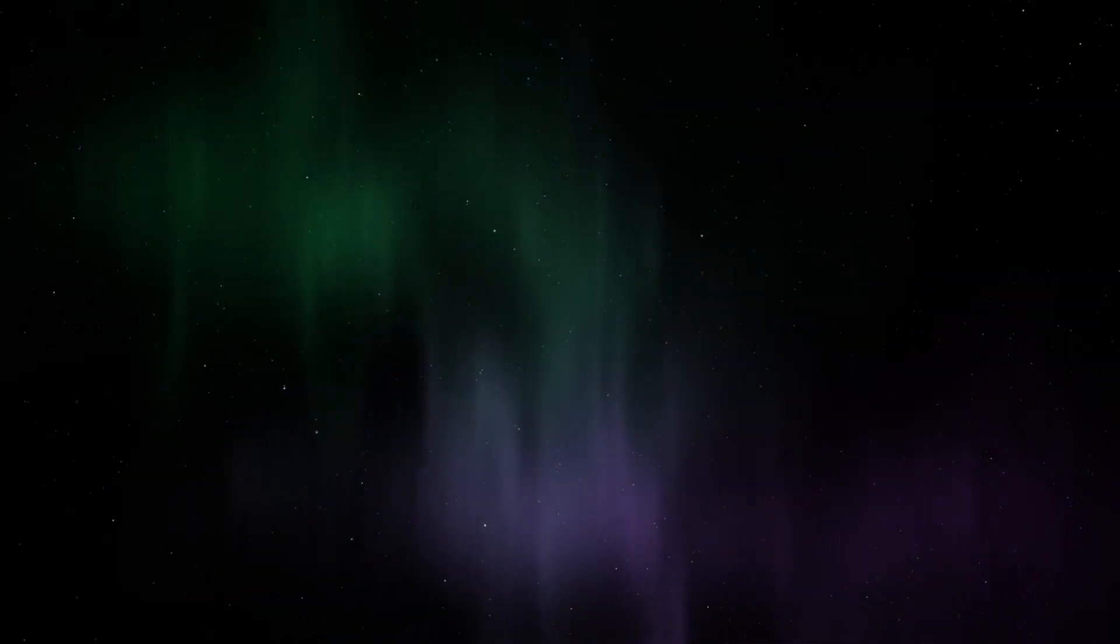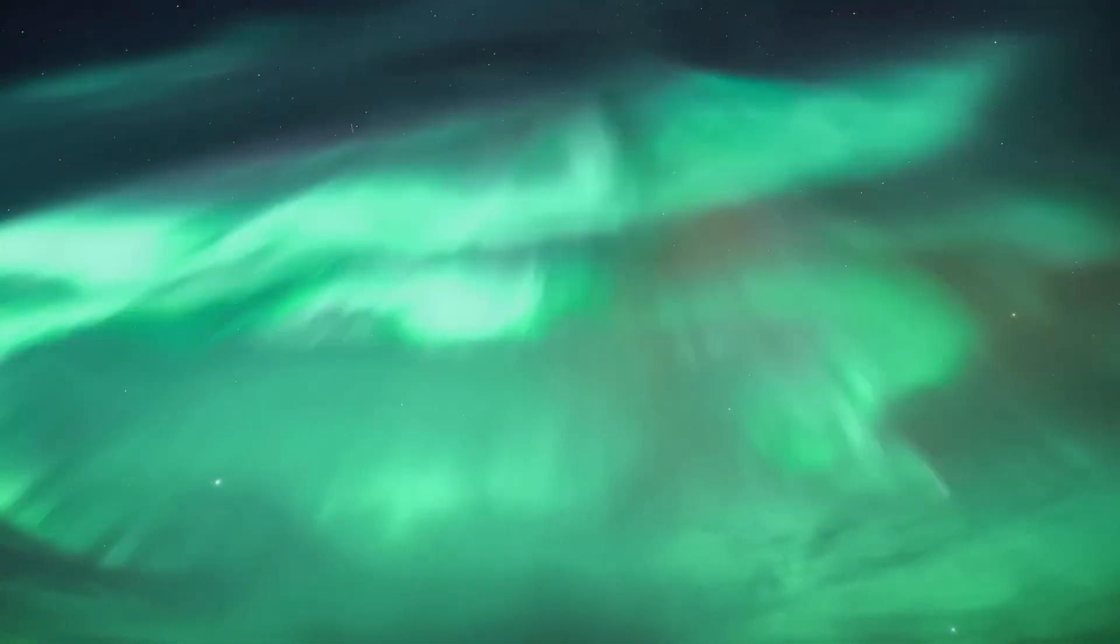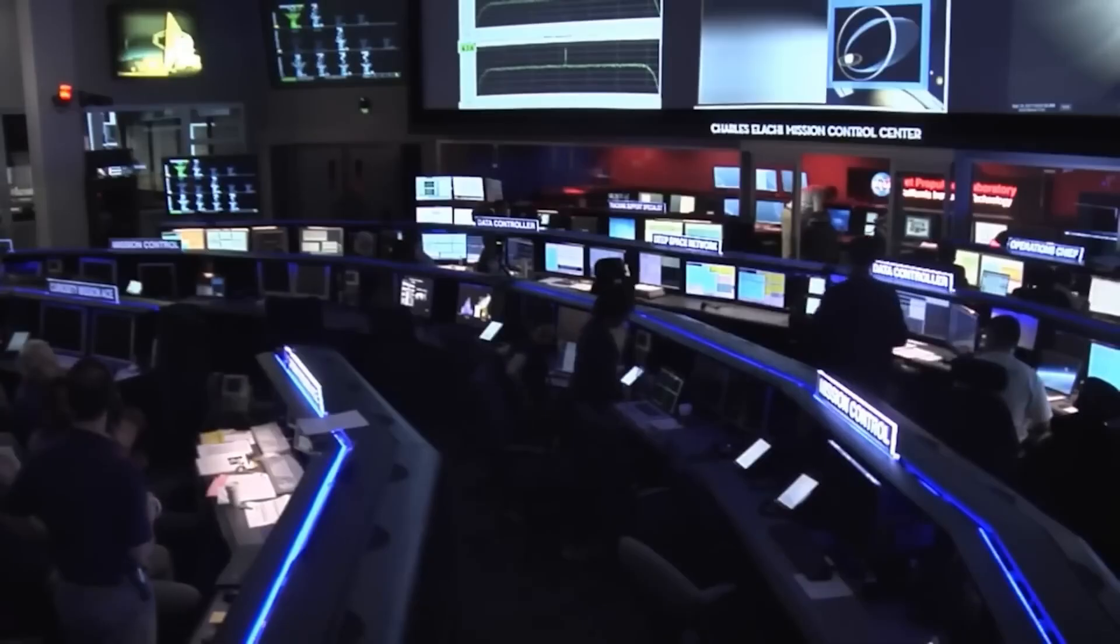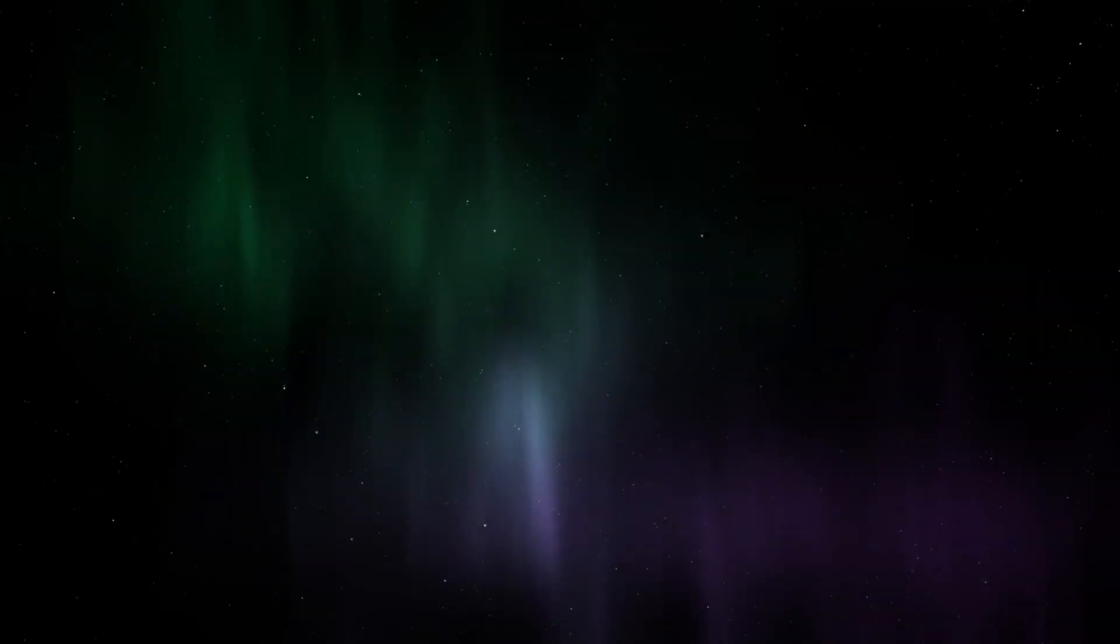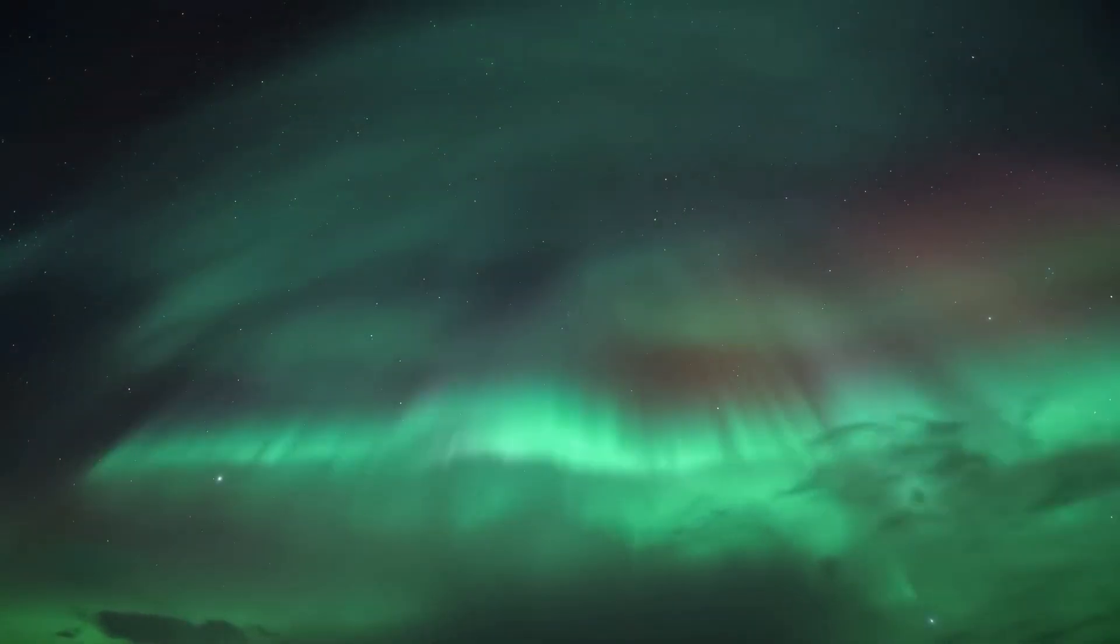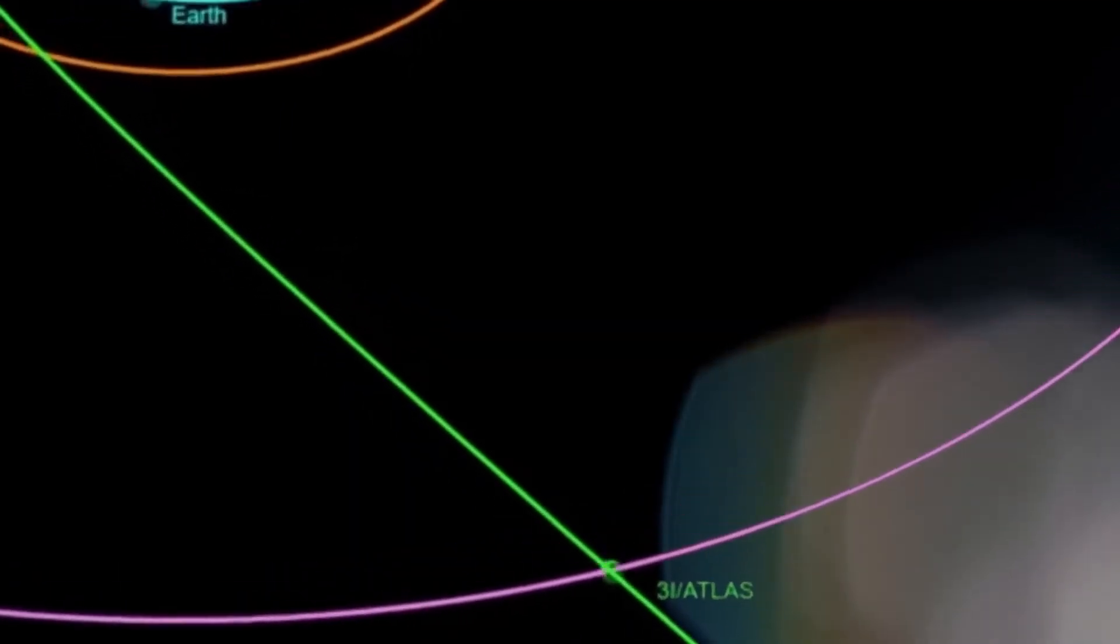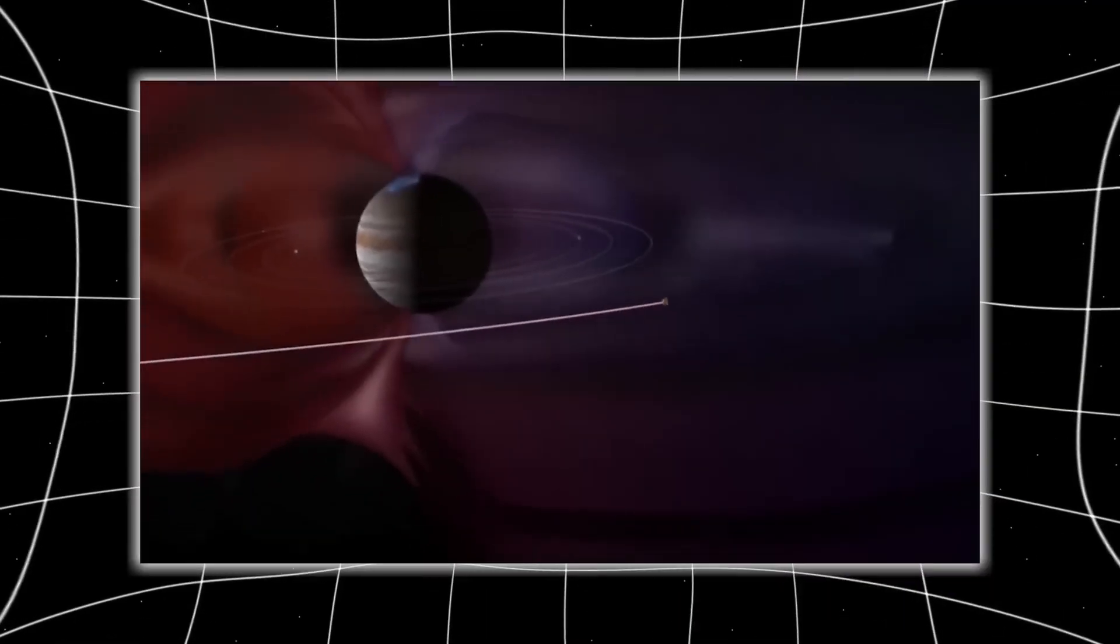Mars, with its thin atmosphere and fragmented magnetic field, rarely experiences auroral activity. Yet as 3i Atlas passed overhead, ultraviolet cameras aboard the orbiters captured sweeping waves of light rippling across the planet's nightside. The auroras weren't red or blue like those seen on Earth. They were green, the same eerie hue emitted by the comet itself. For several hours, the entire sky above Mars shimmered as though the planet's upper atmosphere had been electrified. NASA called it a magnetospheric interaction event. But the timing was too precise, the geometry too perfect. The comet had brushed against Mars, leaving the entire world humming like a resonant bell. The strange glow faded only after 3i Atlas continued on its path. Yet instruments across all missions reported a residual electromagnetic vibration, as if Mars had been marked by the encounter.